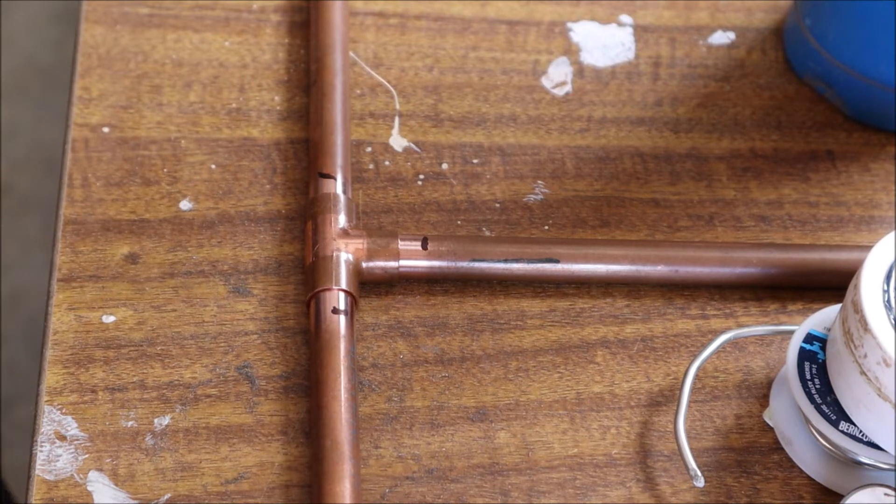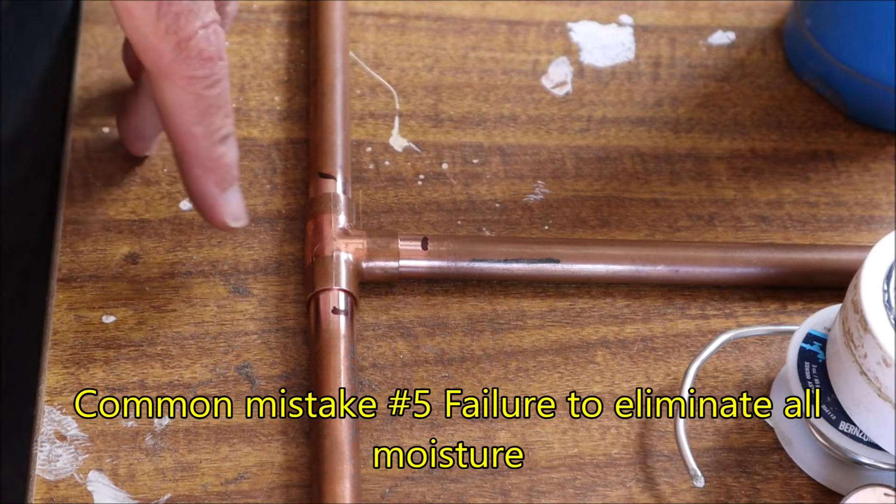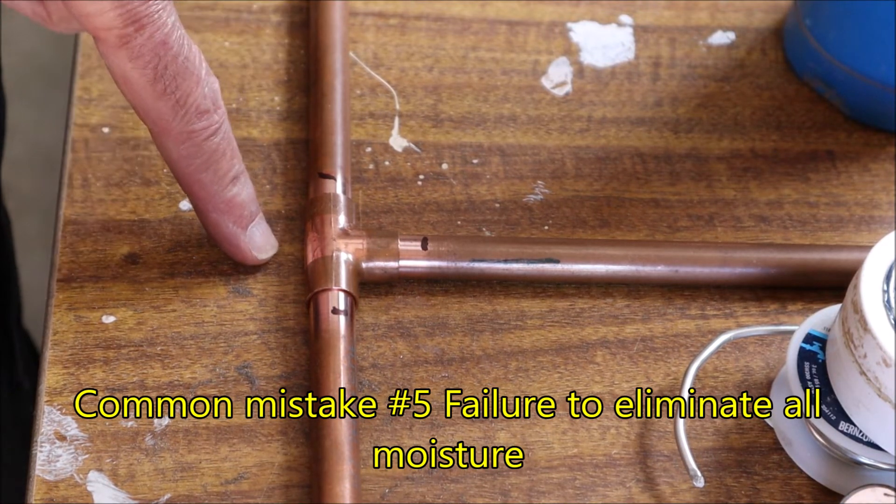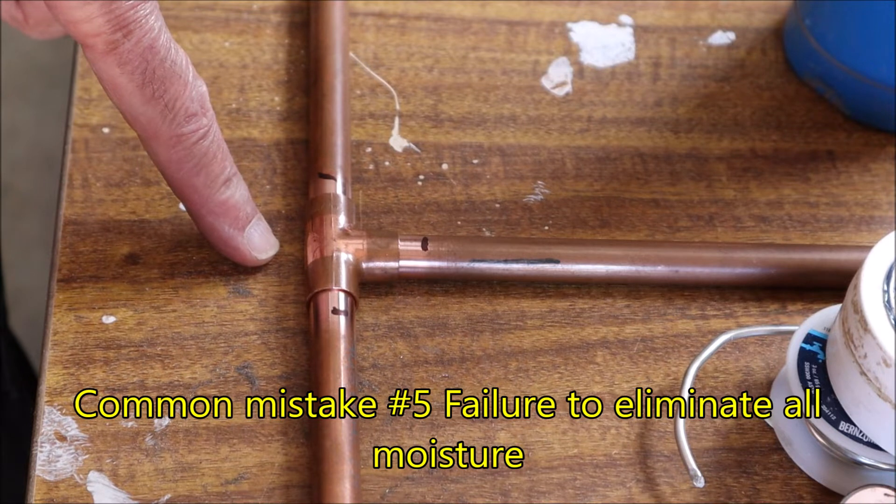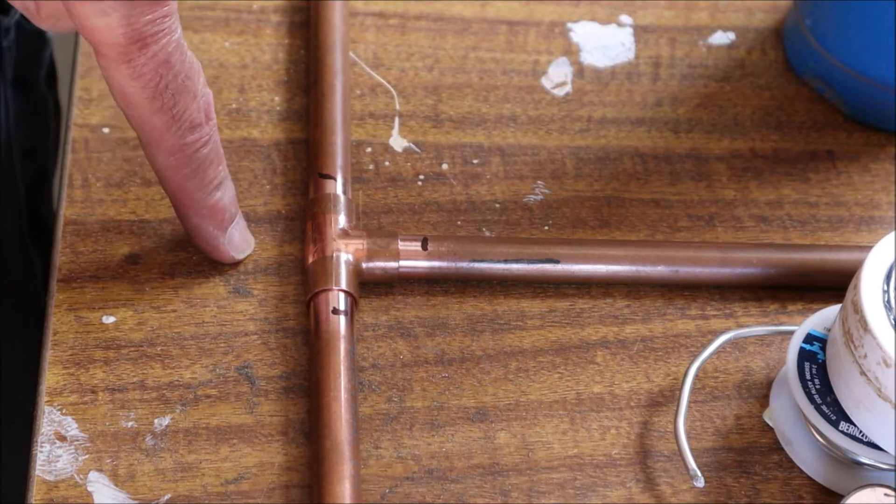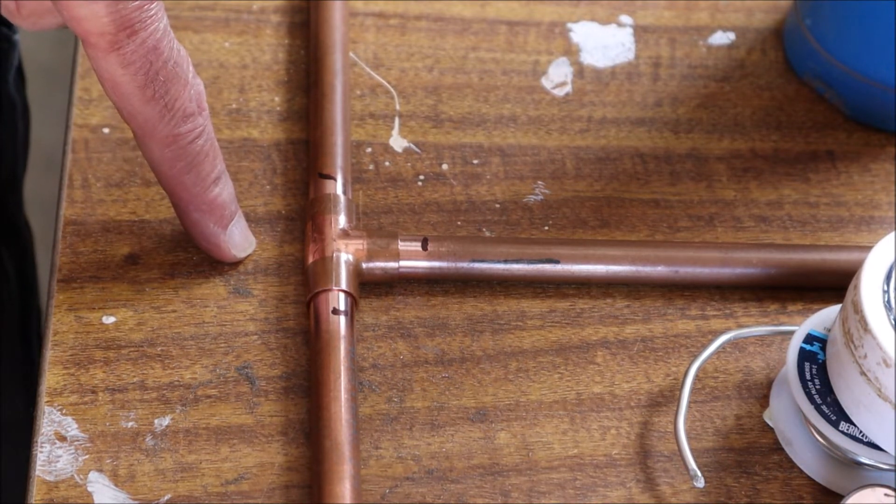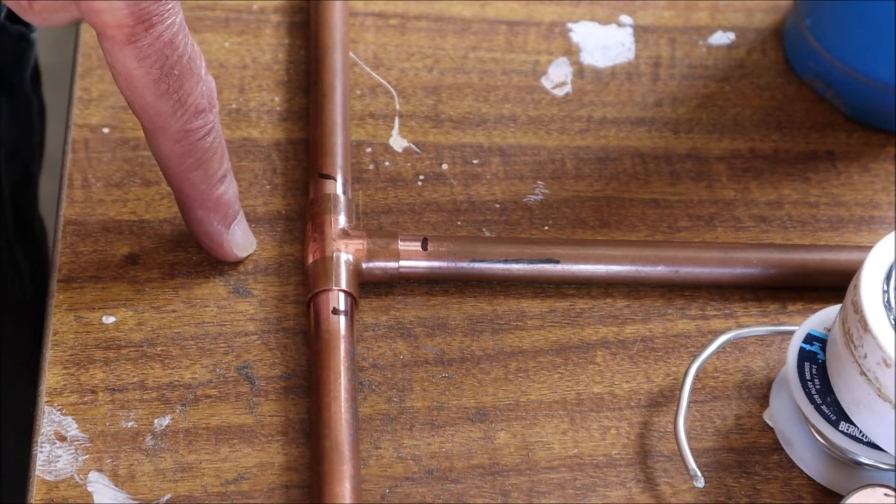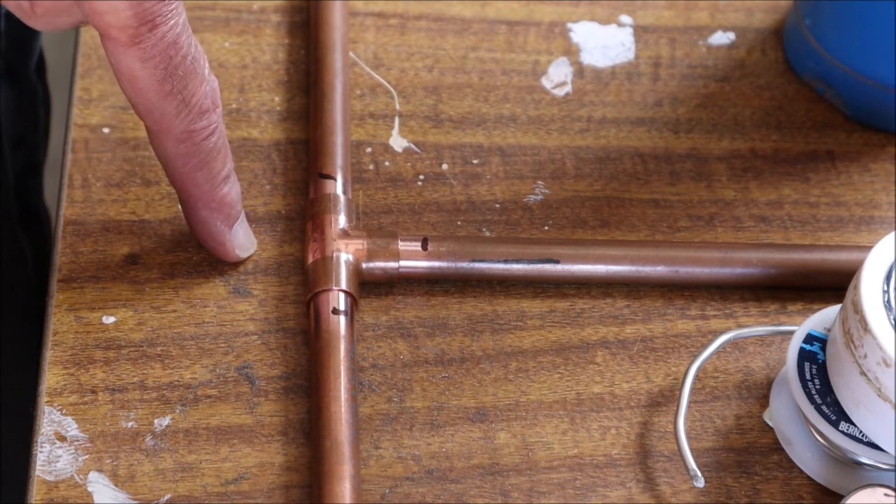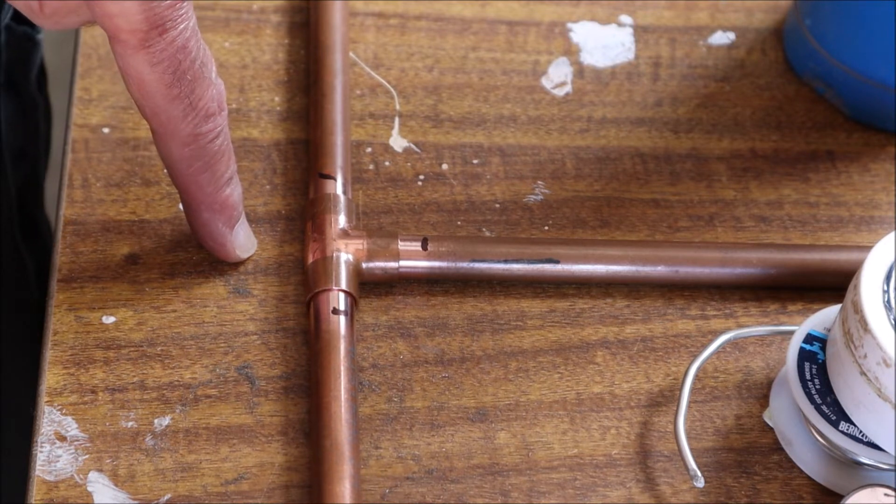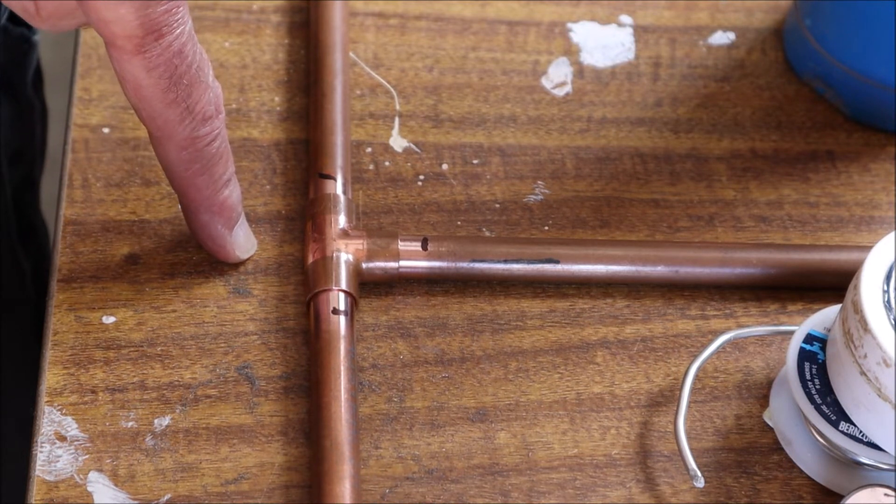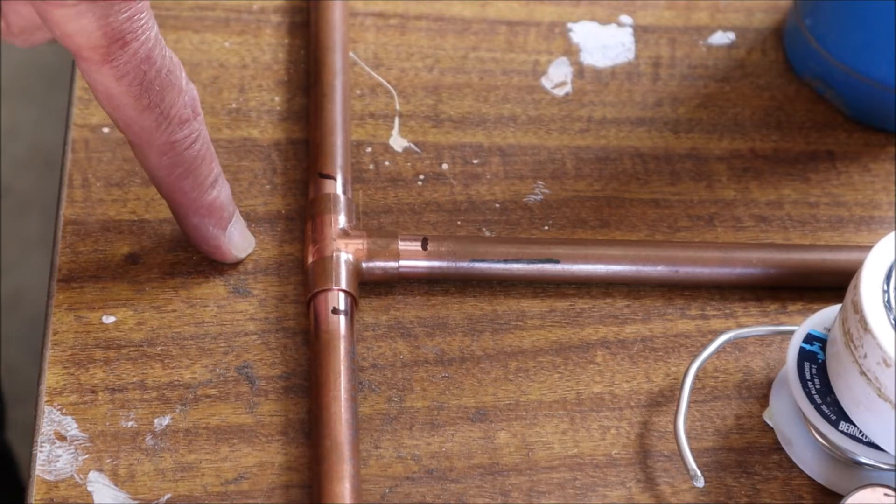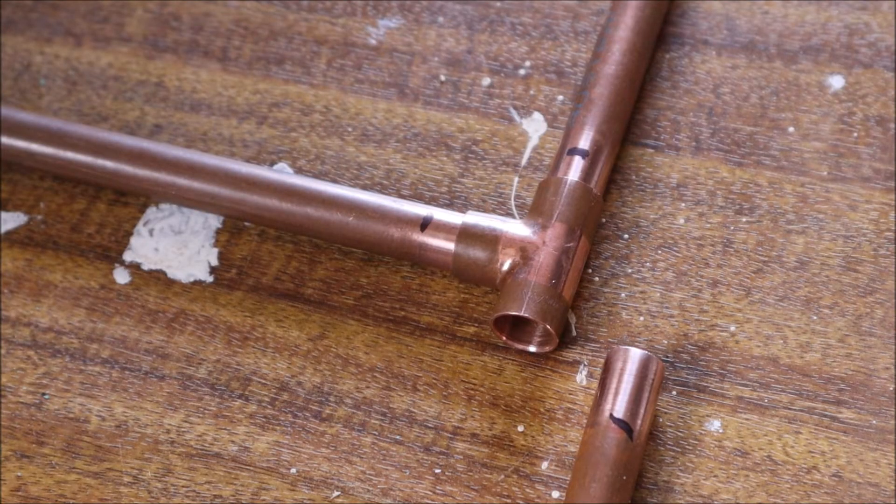The other thing that can cause your joint to fail—we may as well talk about it now—is if you're soldering onto existing plumbing and there's still water in the system. If you get any water in here, even a smidgen, your joint will fail. Solder does not work where there's any moisture whatsoever, so you've got to be absolutely sure that it's completely dry before you try and solder.